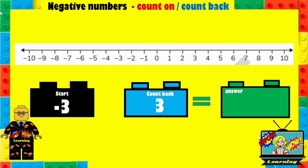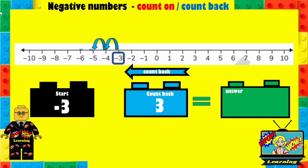Here's another one. This time we're starting at minus 3 and we're going to count back 3. Try to remember what count back means. You can pause this, try to answer it, and then don't forget to press play to see if you got your answer correct. So we start at minus 3. When we count back it means we go to the left 3 places: 1, 2, 3. So your answer should have been minus 6.